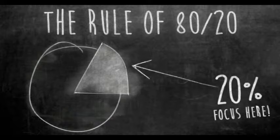Later, he discovered that virtually all economic activity was subject to this principle, in that 80% of the wealth of Italy during that time was controlled by 20% of the population.